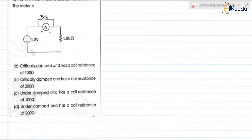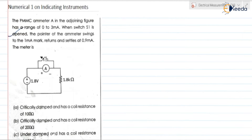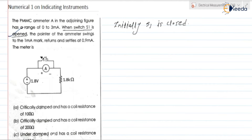Option 1: critically damped with a coil resistance of 100 ohm. Option 2: critically damped with coil resistance of 200 ohm. Checking the given data — when S1 is opened means initially S1 is closed. Initially S1 is closed, so S1 is acting as a short circuit.